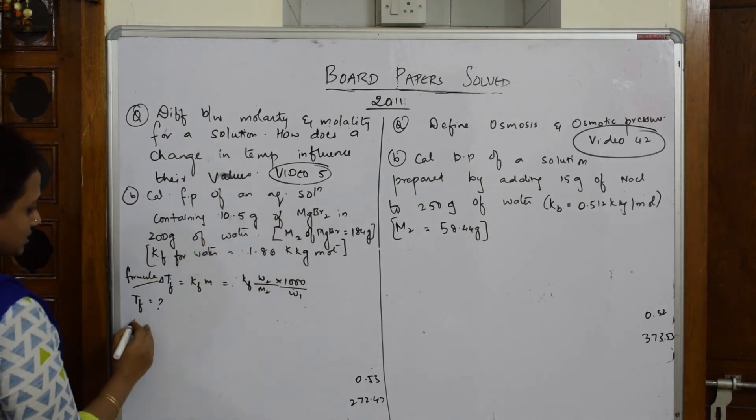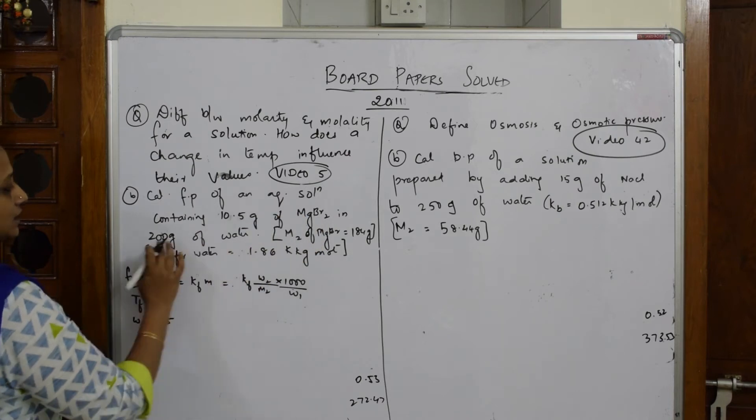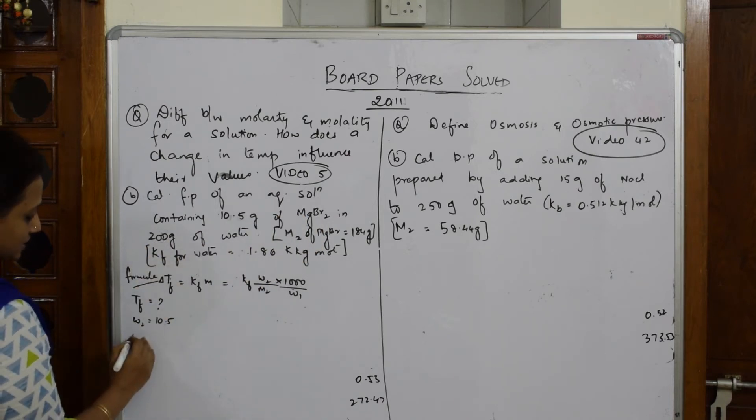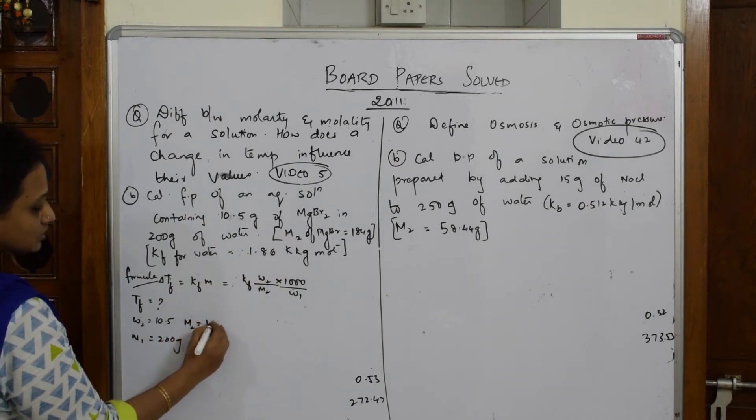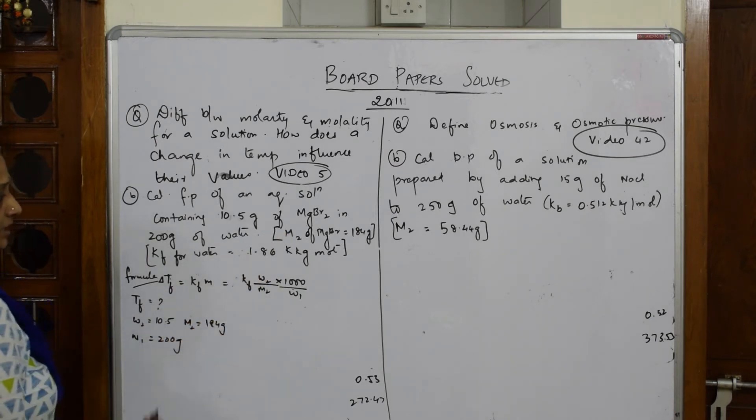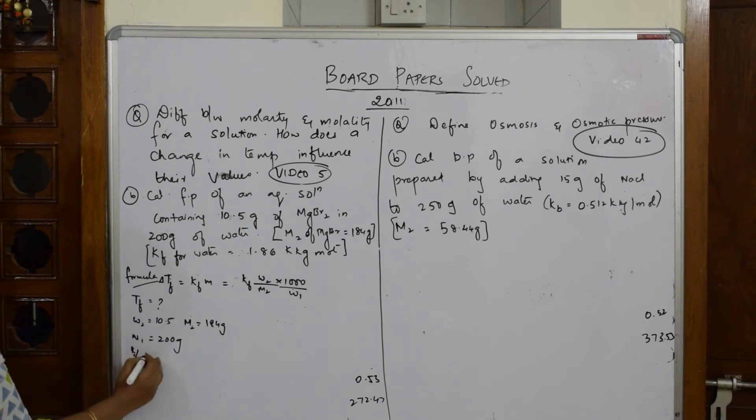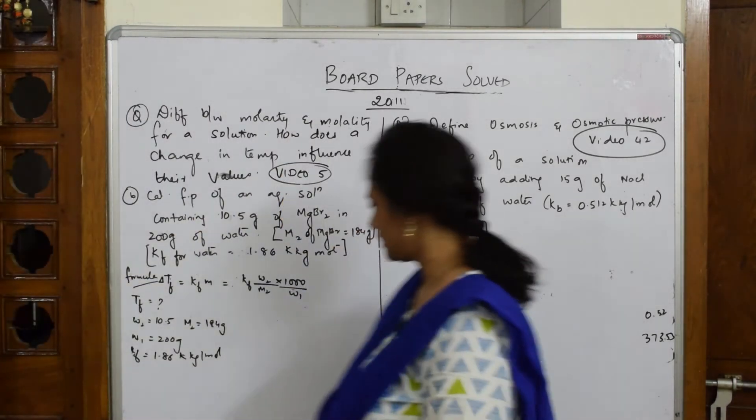The solution contains 10.5 grams of magnesium bromide, so w2 equals 10.5. In 200 grams of solvent, w1 is 200 grams. Molecular weight m2 equals 184 grams.